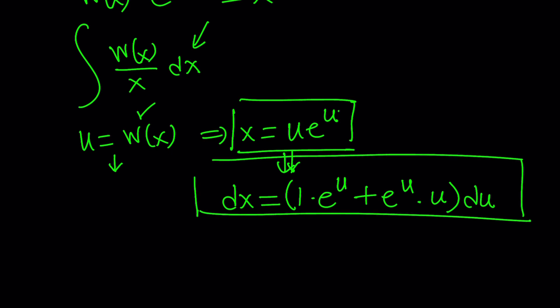So we're going to do these two replacements. W of x is just going to be u. So it's going to be u divided by x, which is u e to the u, multiply by dx.